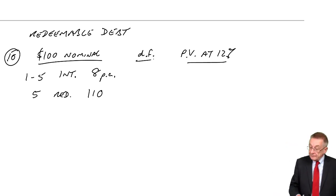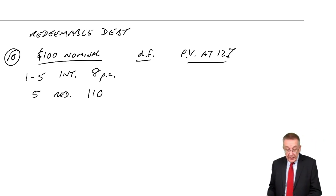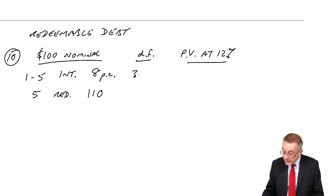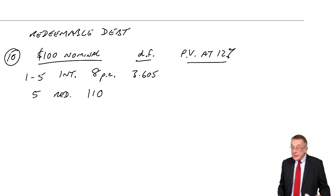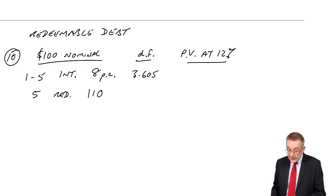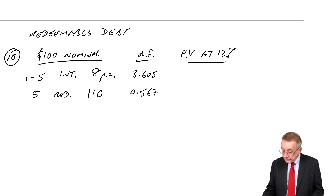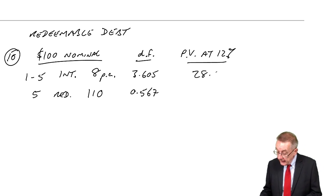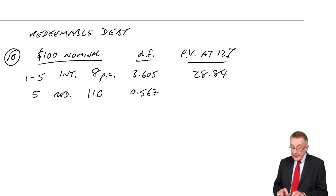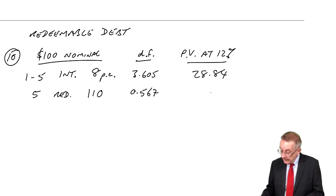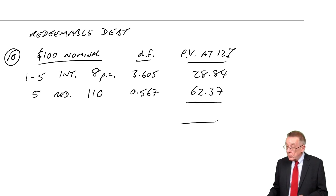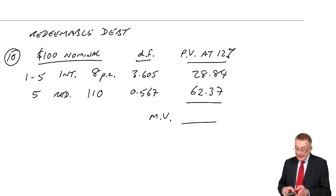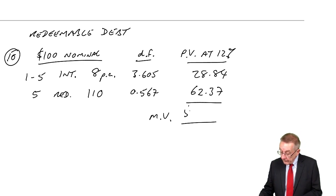The $8 a year is an annuity for five years. The five-year annuity factor at 12% is 3.605. The redemption uses the ordinary present value factor for five years at 12%, which is 0.567. So the present value is: 8 × 3.605 = 28.84, plus 110 × 0.567 = 62.37. The total present value — the market value — is $91.21.